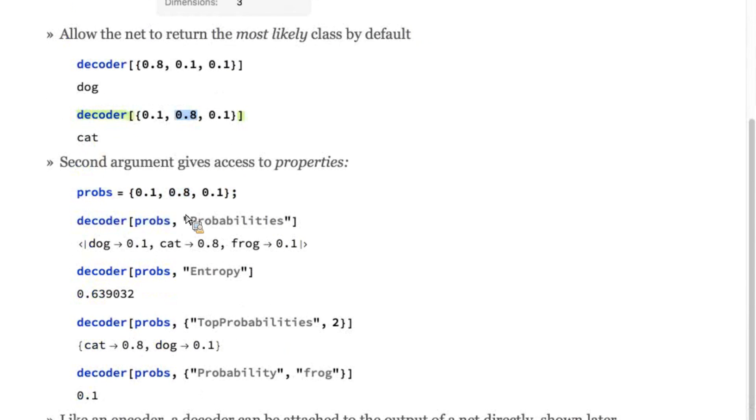But if we use a second argument to the decoder, we can access other useful properties, like the entropy of a particular prediction, or the top-end classes and their probabilities, or the probability of a specific class, like frog here. So like an encoder, a decoder can be attached to the output of a net directly.